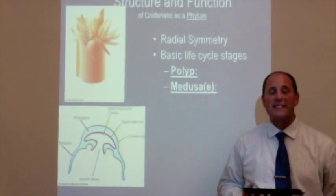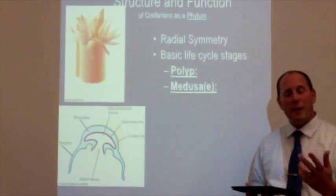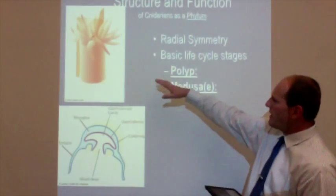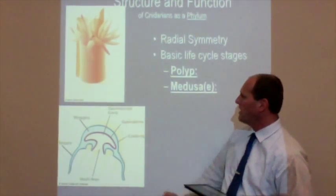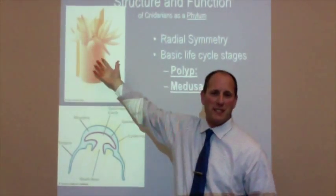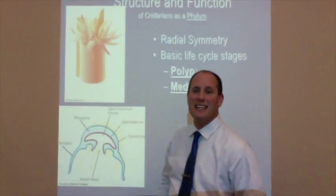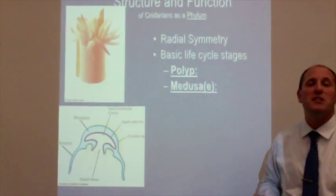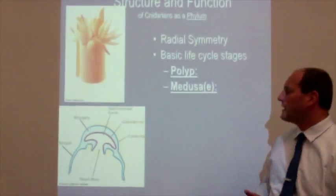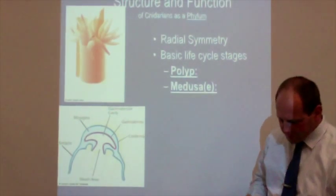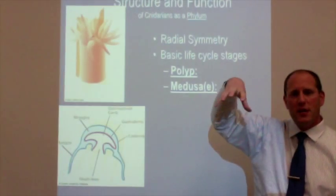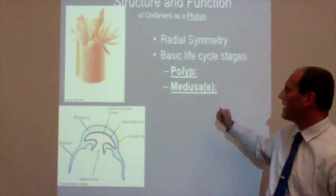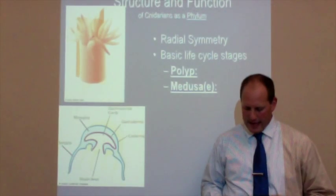The polyp form consists of vase-shaped organisms specialized for a sessile — meaning attached — life. In the picture you can see this basic vase shape, which should be familiar as a sea anemone, with a bottom that opens up at the top. The medusa, or medusae, form is bell-shaped. Think of the vase form pointing up and the medusa form like a bell, specialized for a swimming existence.